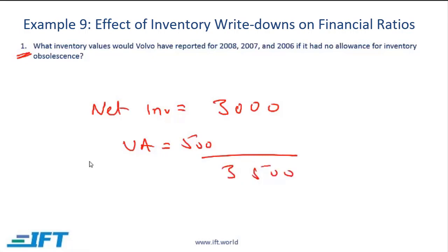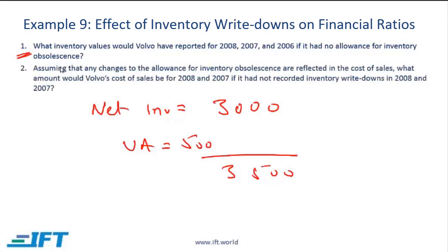The real challenge is looking through the various footnotes and trying to extract the relevant information, but the underlying principle is straightforward. The next question: assuming any changes to the allowance for inventory obsolescence are reflected in cost of sales, what would Volvo's cost of sales be for these years if it had not recorded inventory write-downs?